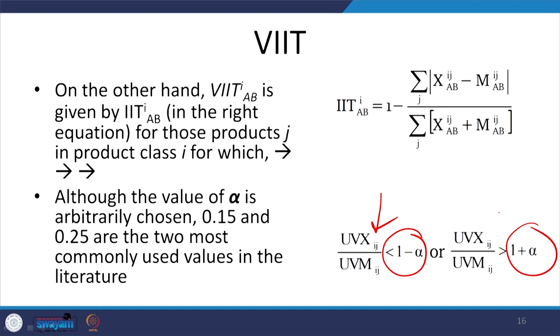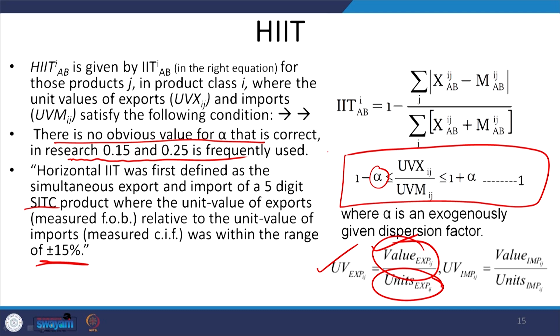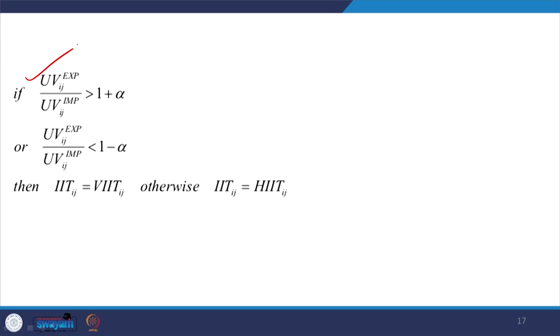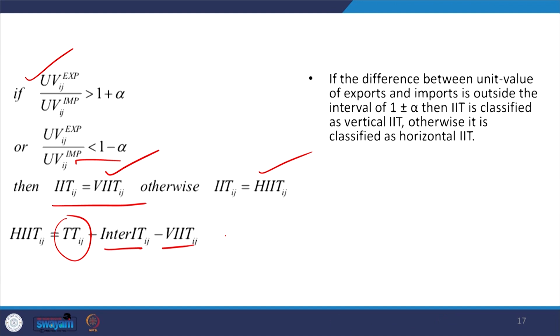If the unit value is within the defined limit, we clearly define the intra-industry trade to be horizontal. If the unit value dispersion exceeds 1 plus alpha, or falls below the lower bound, then IIT at the aggregate is called vertical intra-industry trade. Otherwise, if it is not, IIT is called horizontal intra-industry trade. Horizontal industry trade is therefore: total trade minus intra-industry trade minus vertical intra-industry trade.